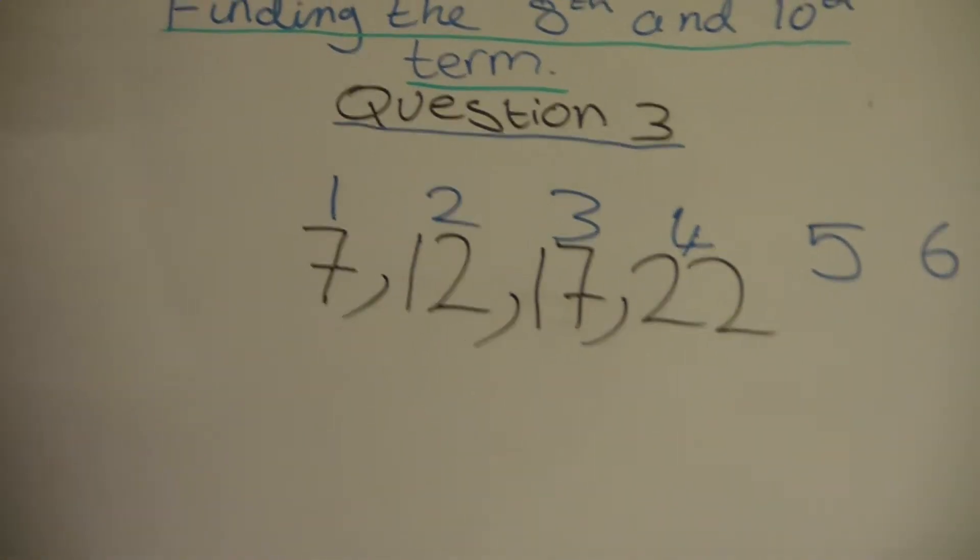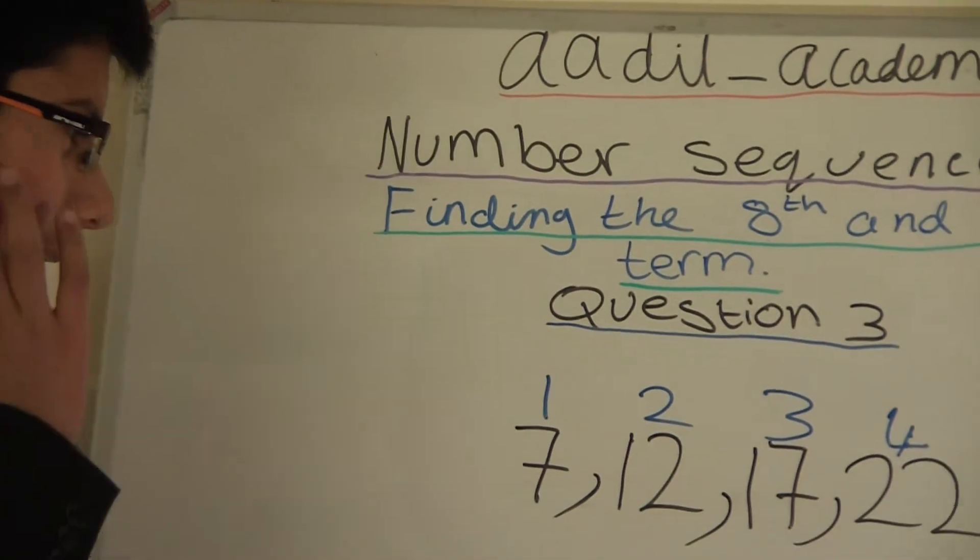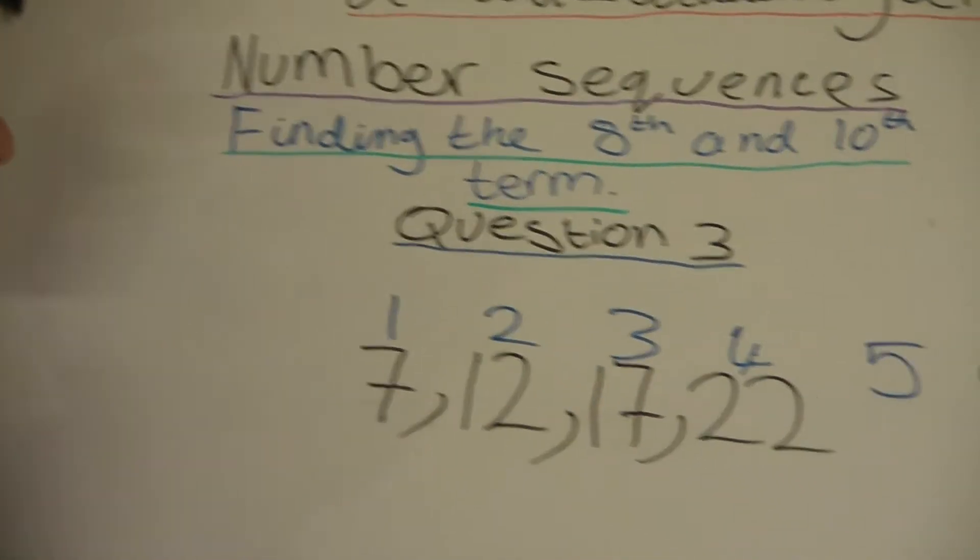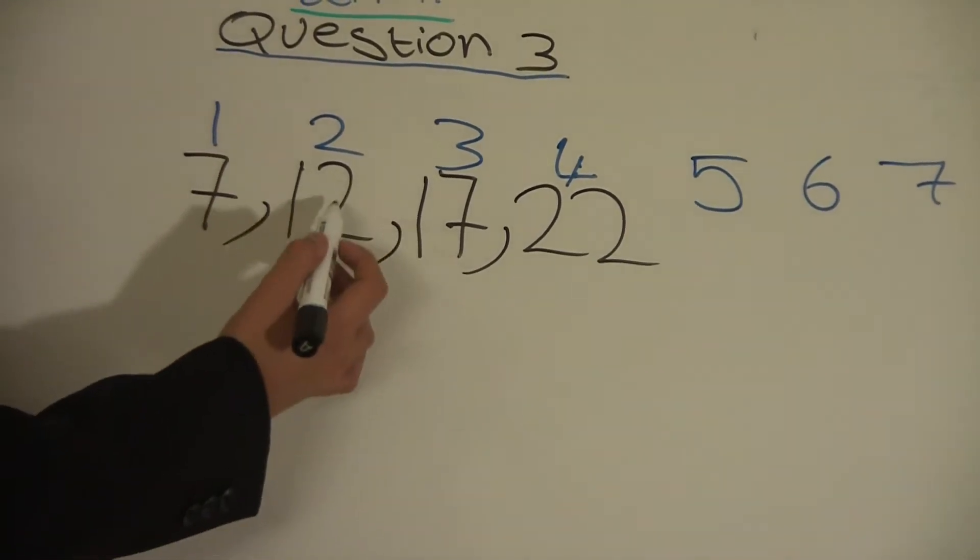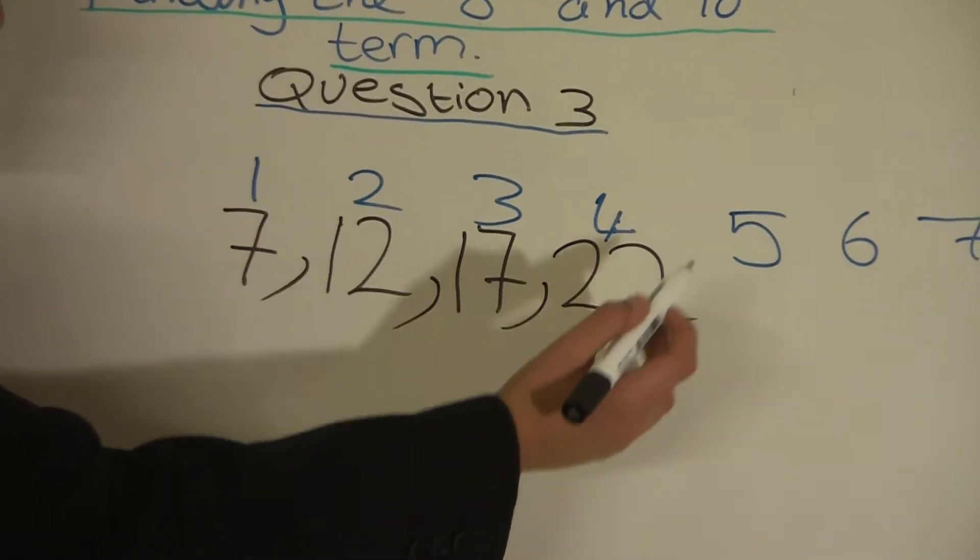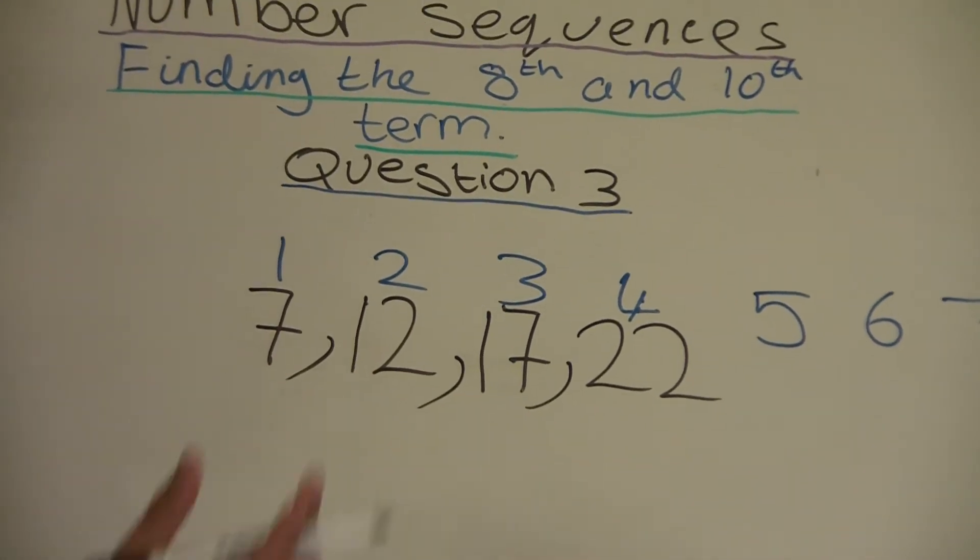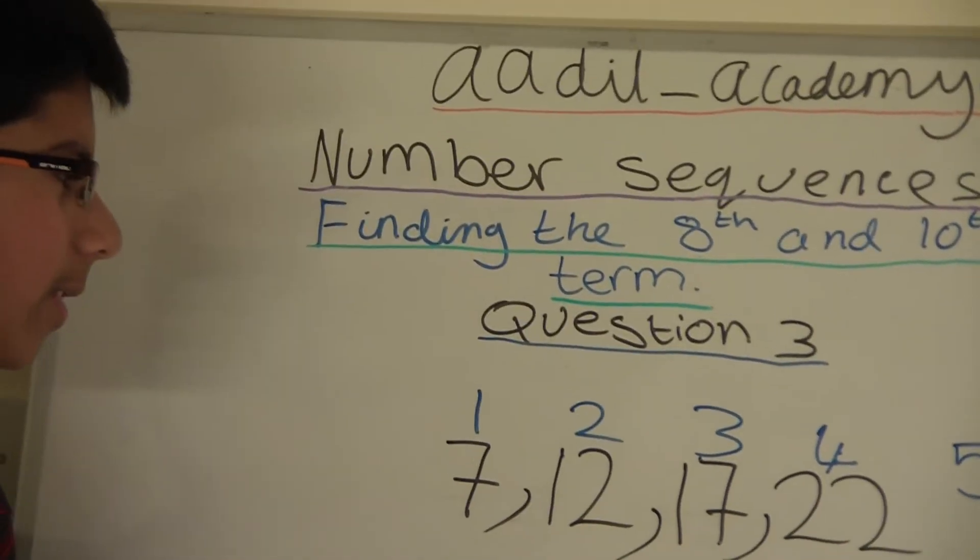First of all we will find the 8th term, then the 10th. So first we have to find the difference between each position. This is position number 1 and this is position number 2, 3, 4, and so on until 10, so we can find the 8th and the 10th term.